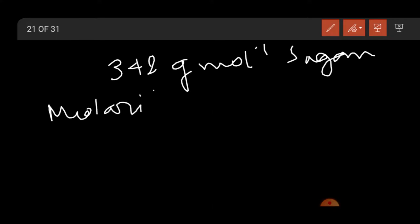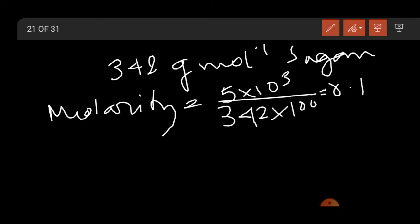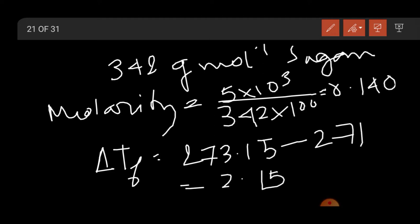This is the depression of freezing point equation. Sugar's molar weight is 342 gram per mol. Now molality will be 5 into 1000 divided by 342 into 100, that means point 146. Delta Tf here is 273.15 minus 271 equal to 2.15.